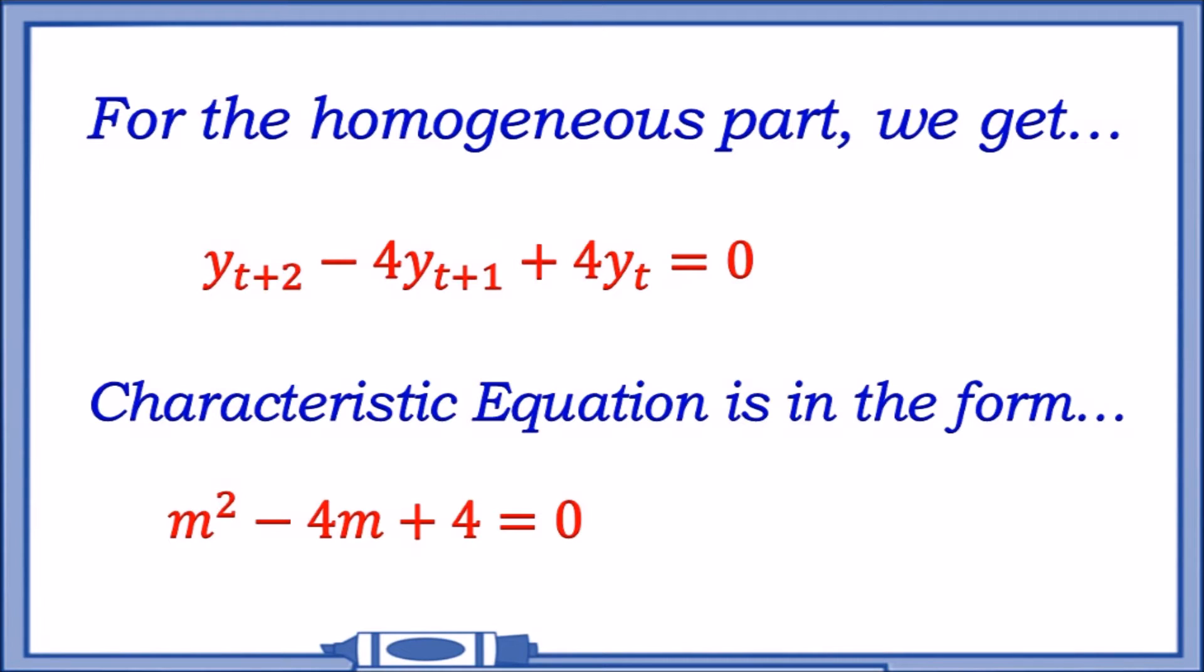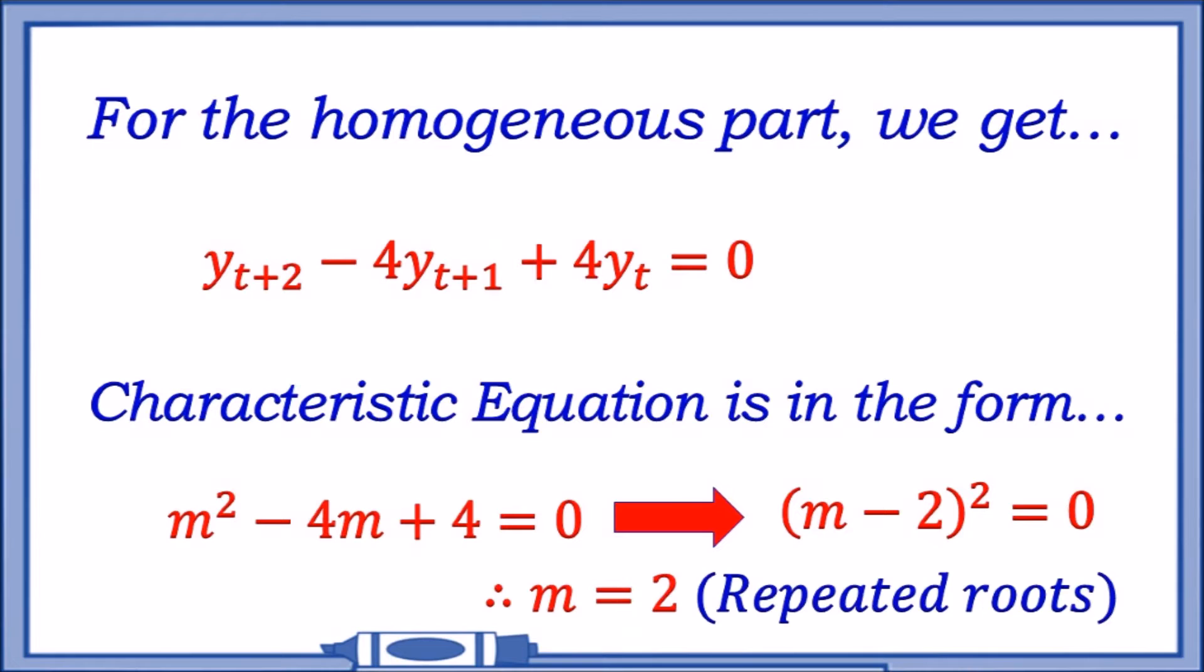We should obtain (m - 2)². Just in case you don't know how we got this, to get 4 we need 2 times 2, and to add -4 is -2 plus -2. Hence why we have something known as repeated roots for m.